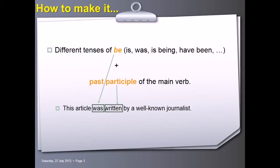To make it, we use different tenses of the verb to be, such as is, are, was, were, is being, have been, and we put the main verb into the past participle form.